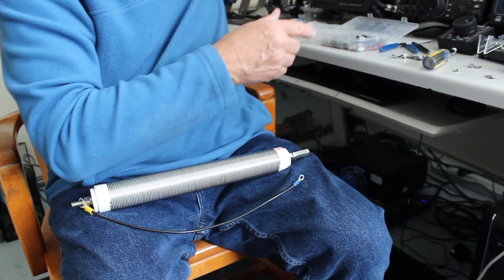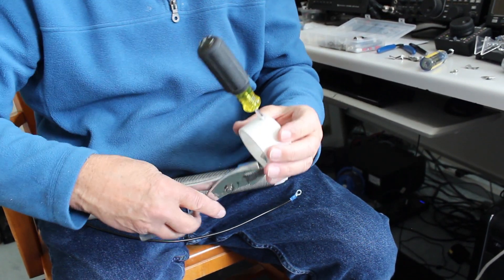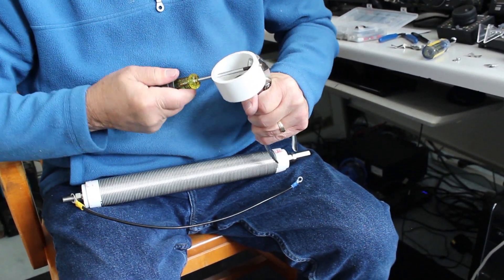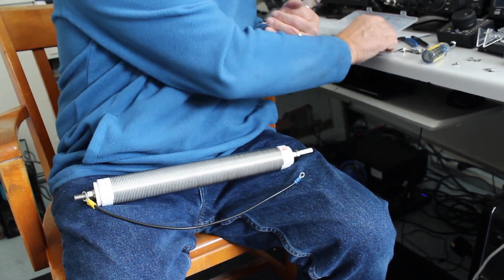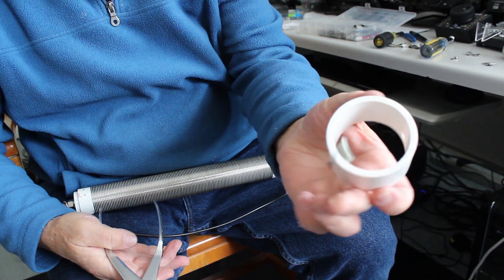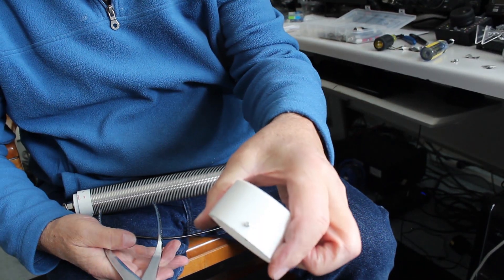Then grab your pliers. Just hold the side of this so it doesn't turn and just snug this up like that. And I just straighten it out and you can see there it is. It's in there like that. That's what you have on the other side.